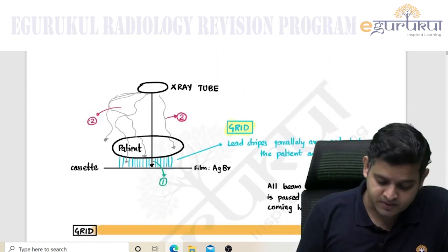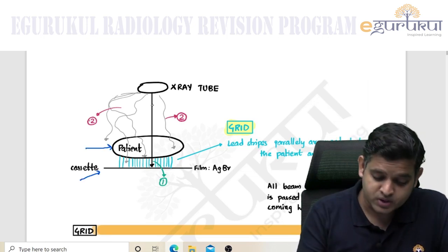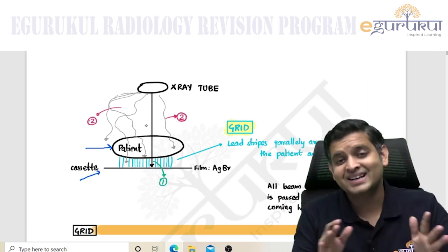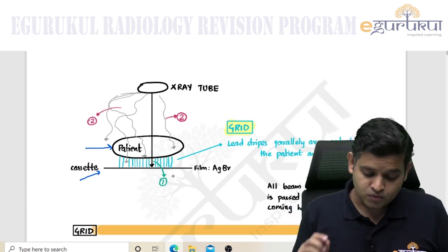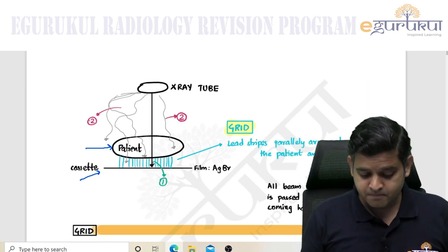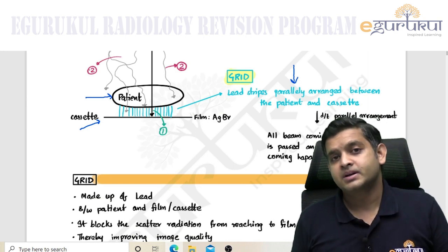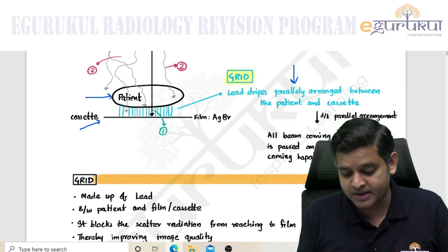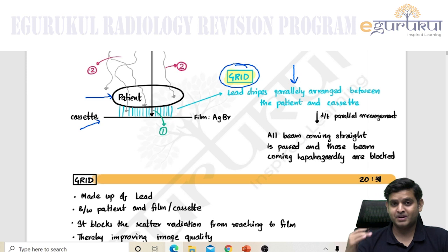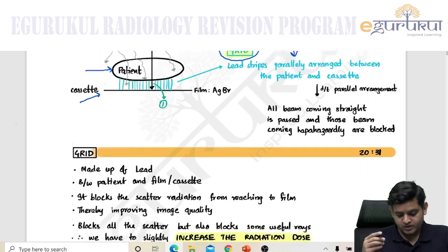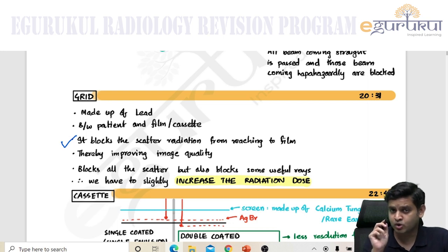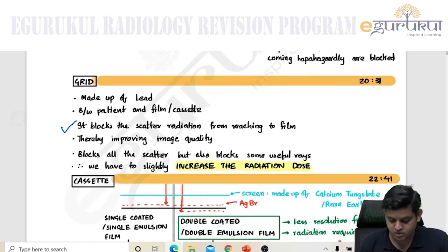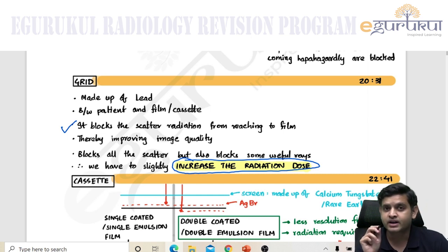After the beam passes through the patient, a lot of scattered radiation reaches the cassette and reduces image quality. To address this, between the patient and the cassette, we place parallelly arranged lead stripes — this is the grid. The grid blocks scatter radiation from reaching the cassette, thereby improving image quality, but at the cost of increasing radiation dose to the patient.